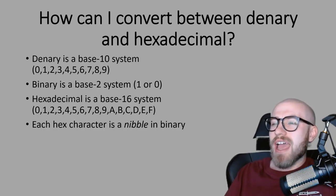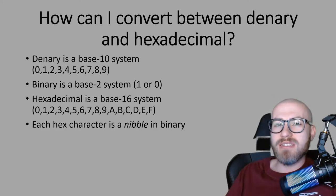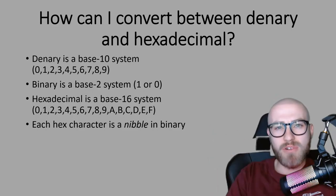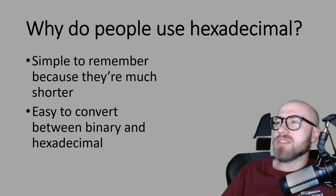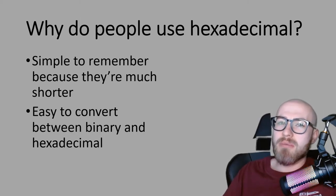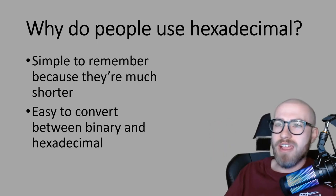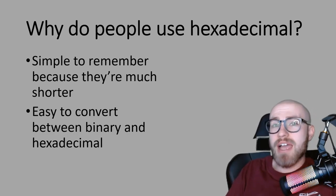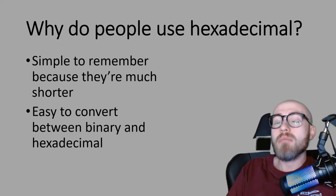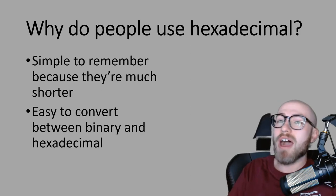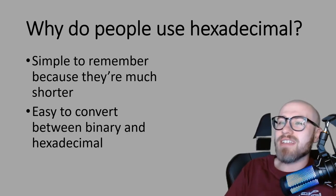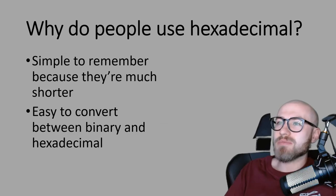Each hex character is a nibble in binary. A nibble just uses the place values 1, 2, 4, 8 — it doesn't use a whole byte up to 128. So why do people bother using hexadecimal? It's really simple to remember because it only uses a nibble, making it short, quick, and easy to convert between binary and hexadecimal. This has been an exam question before — if asked why people use hexadecimal, the answer is it's simple to remember and easy to convert.